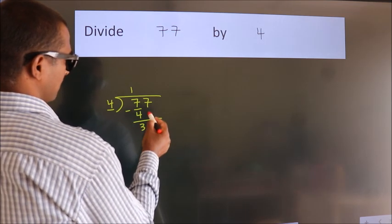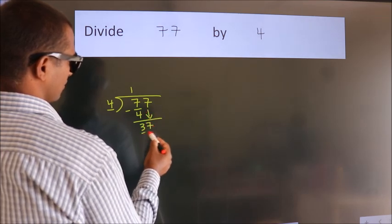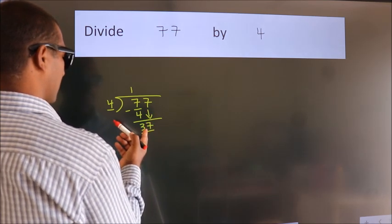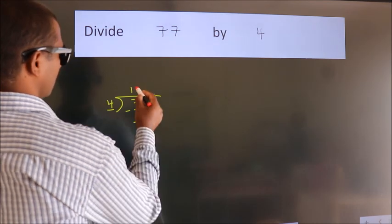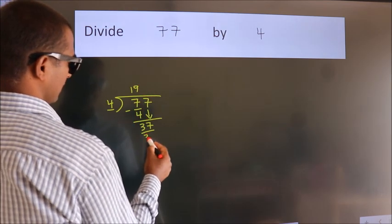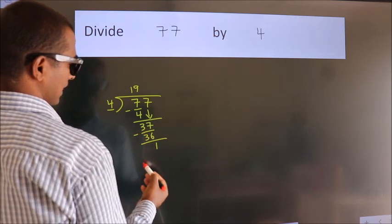After this, bring down the beside number, so 7 down, giving us 37. A number close to 37 in the 4 table is 4 nines, which is 36. Now we subtract and get 1.